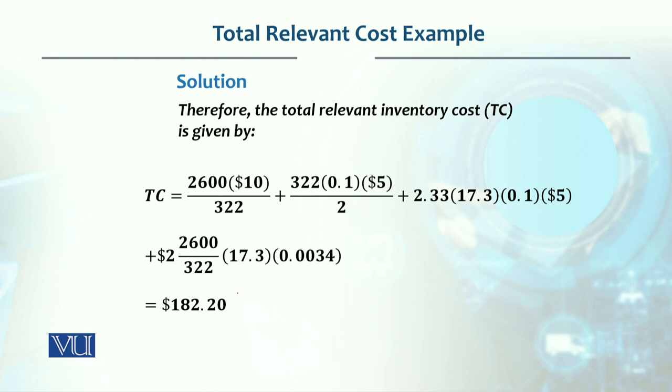What we will get is $182.20. This is for the entire policy in which we've determined what the Q value will be.